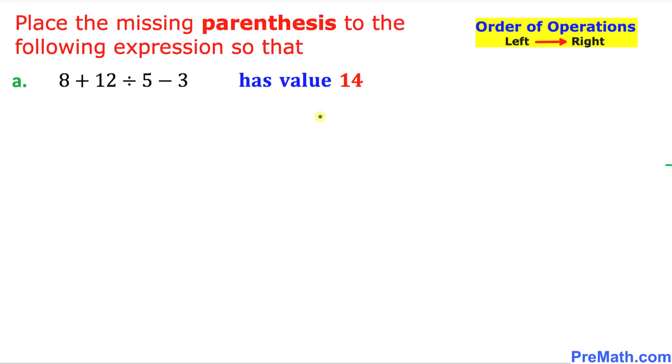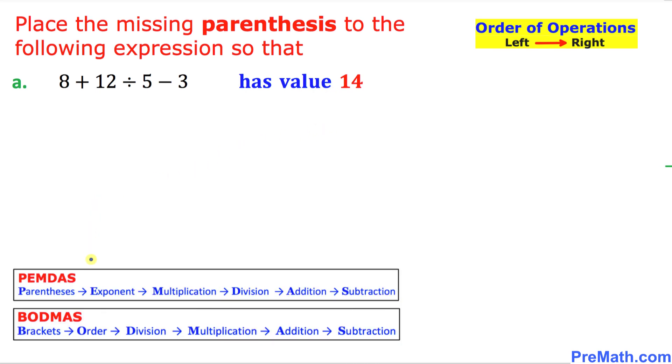Let's get started with part A. We are going to put a parenthesis in such a way that we will get a value of 14. For that purpose, we will be using these two rules we call PEMDAS or sometimes BODMAS. Can you find the correct spot where you can place the parenthesis or the brackets so we can get the value of 14?